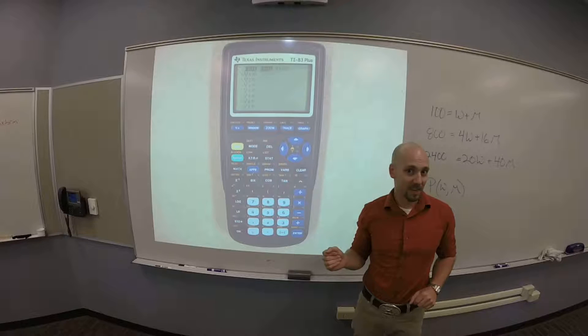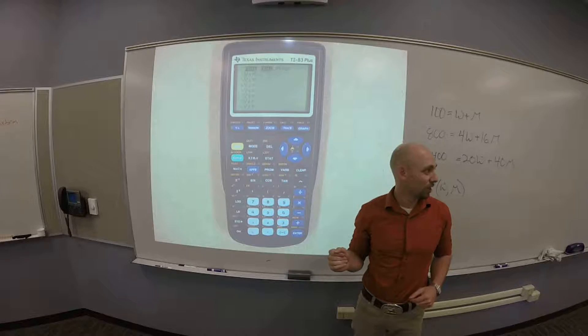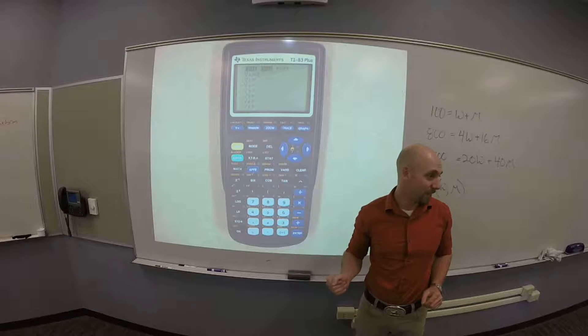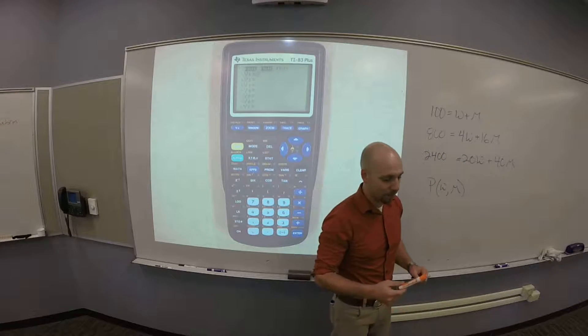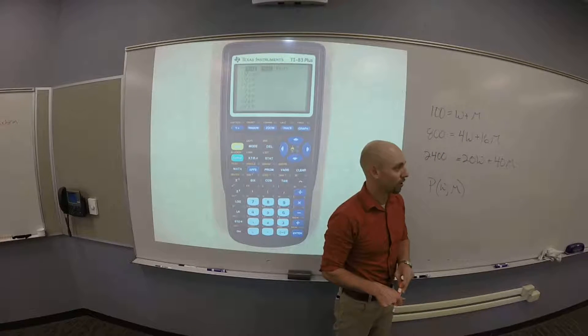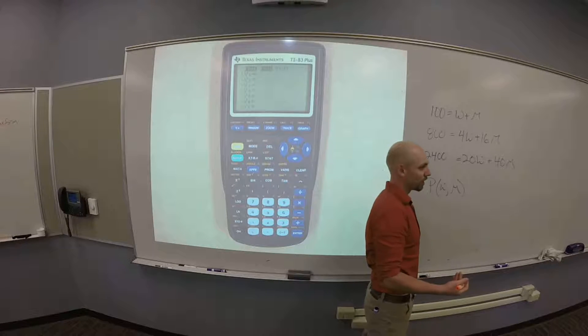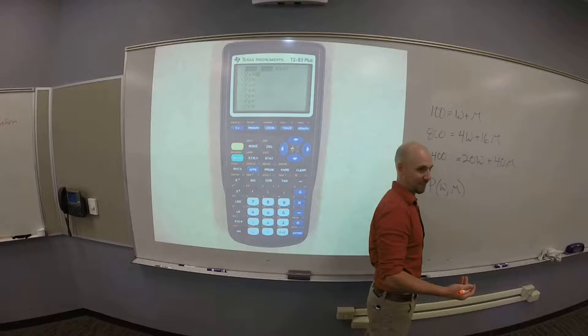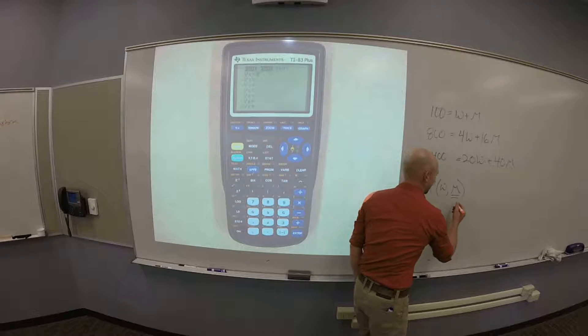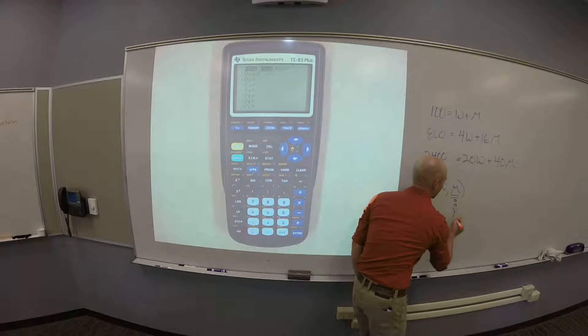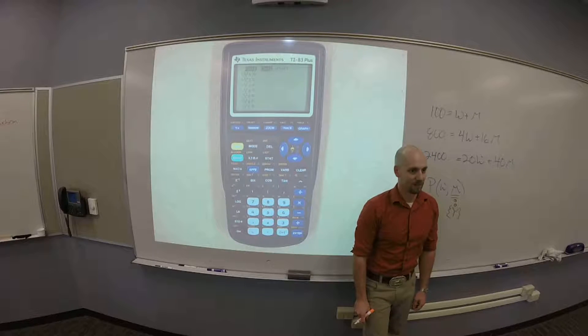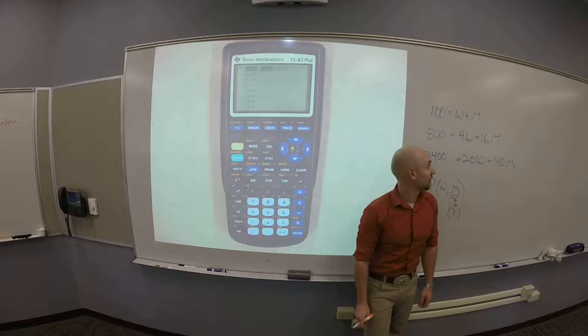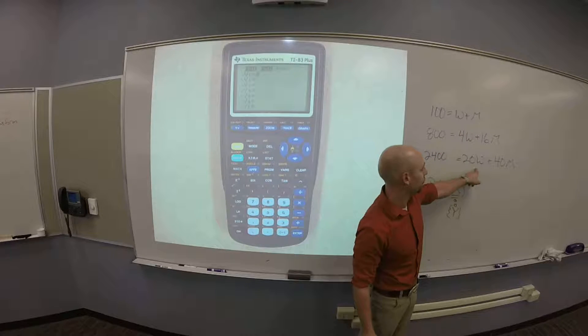But your calculator is pretty dumb and so it only knows how to graph things when you have Y equals. So, the first thing you want to do is go look at how you set up your profit function or your objective function and figure out which thing is playing the role of Y. That's going to be this guy. When I look at that, I'm thinking Y is M.